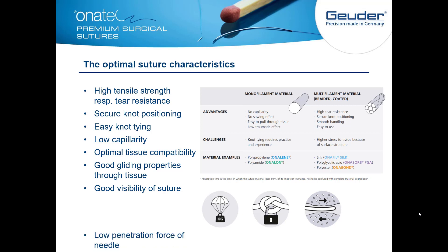For every suture task, there is a needle that penetrates tissue and leads the suture. One of the most crucial factors for sensible structures, especially in the eye, is penetration force. More force means the surgeon dents or buckles the tissue more. Therefore, minimal penetration force is the primary goal for every needle.